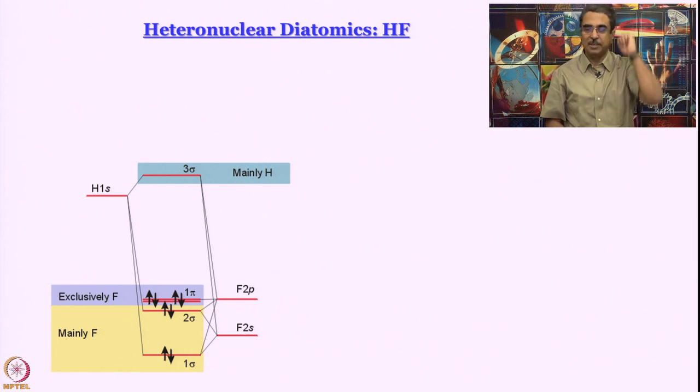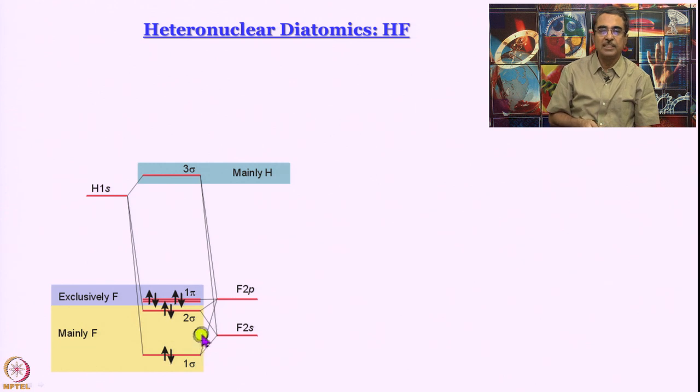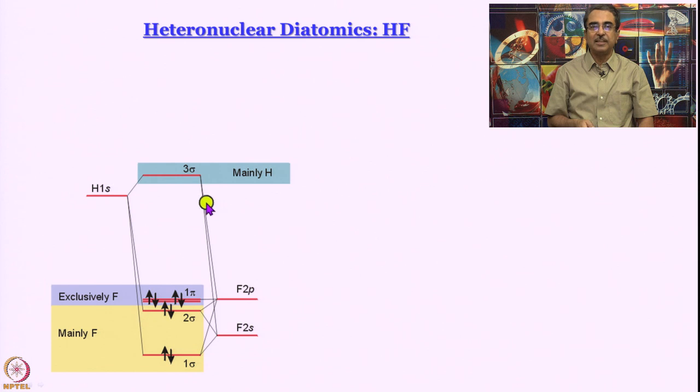What about the sigma orbitals? Well, sigma orbitals do participate in a linear combination because there is the right geometry. But energies are so much lower that these bonding orbitals that you get are mostly orbitals that have contribution from 2s and 2p orbitals of fluorine, not so much from hydrogen atom 1s. And this 3 sigma, the anti-bonding orbital here, that resembles the hydrogen atom wave function very closely.